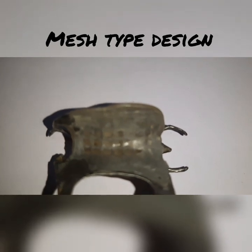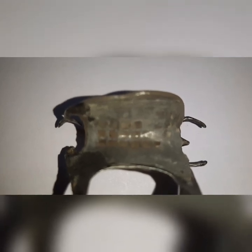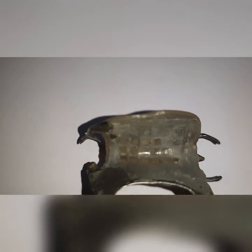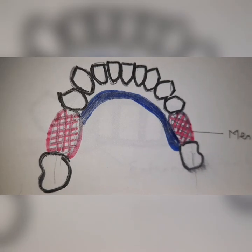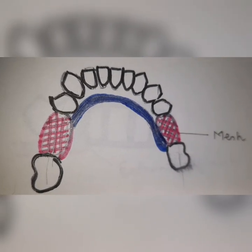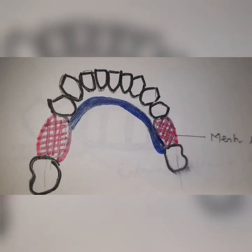Another type of minor connector is the mesh type. It consists of thin metal sheets with multiple holes. It can be used in cases of multiple missing teeth. The only problem is that it is difficult to pack acrylic resin, as excess pressure is required to allow the resin to flow through. It does not provide as strong an attachment as the lattice type, and tissue stops are also required.